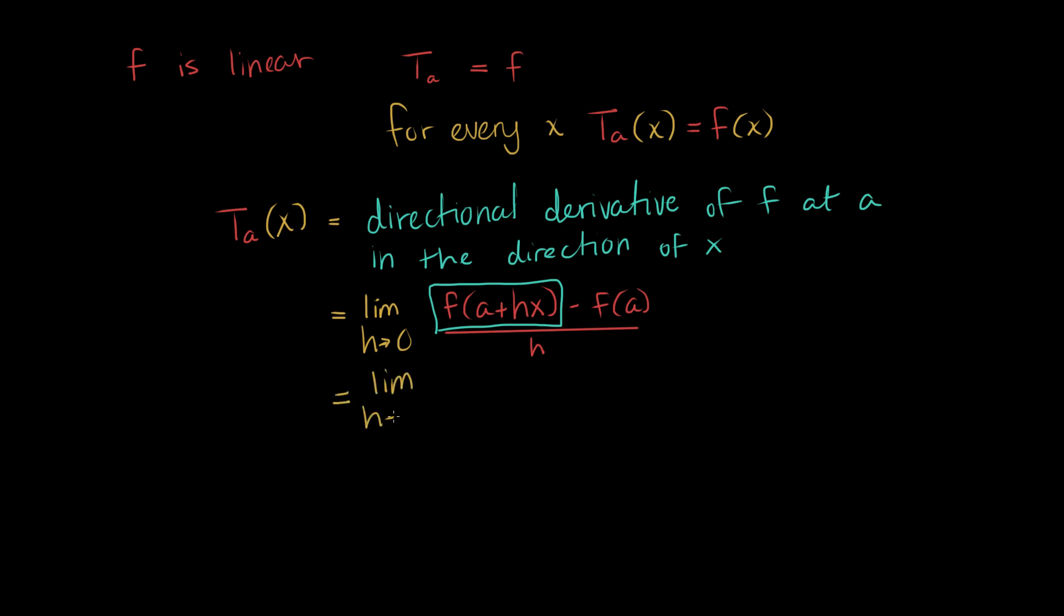This is the limit as h approaches 0, of F of a, let me use my correct colors, of F of a plus F of h times x minus F of a all over h. Great. Now, we can cancel out the F of a's. Cancel, cancel, and rewrite.